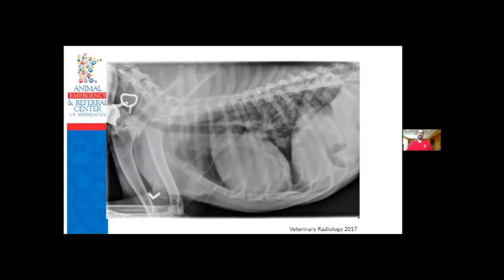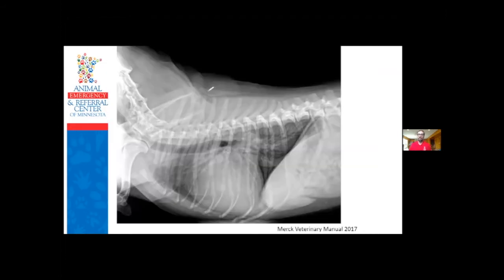One more example: this dog doesn't have the pulmonary infiltrates of the last dog. Drawing the line where the left atrium would be, nothing is sticking up - no left atrial enlargement. The apex looks like it's being lifted off the heart. Comparing the pulmonary artery and vein, the pulmonary artery is more dilated than the pulmonary vein. These findings say pulmonary hypertension to me. Comparing that to a dog in congestive left heart failure: there's a huge left atrial bulge above that line, the carina is pushed almost to the spine, and the pulmonary veins are bigger than the pulmonary artery - classic congestive left heart failure. I would definitely not give that dog sildenafil.